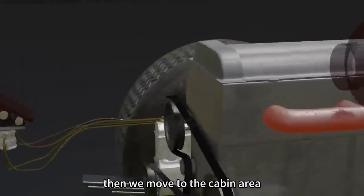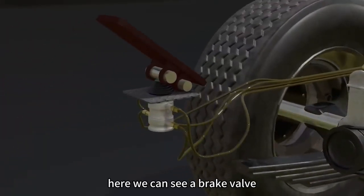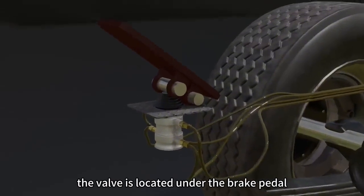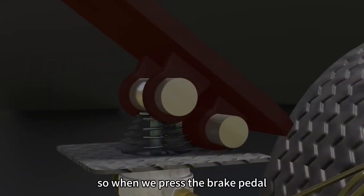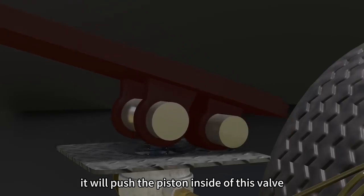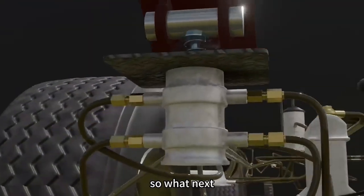Then we move to the cabin area. Here we can see a brake valve. The valve is located under the brake pedal. When we press the brake pedal, it will push the piston inside of this valve. What happens next?